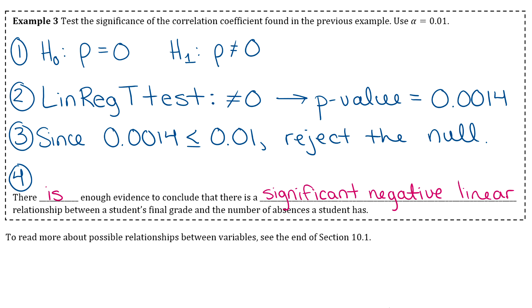You've got to have those three keywords in there. Significant shows that we actually did a hypothesis test and determined it's significant. Negative, we know because our r value is negative. And linear, we know from looking at our scatter plot and seeing that our points did fall in a straight line.